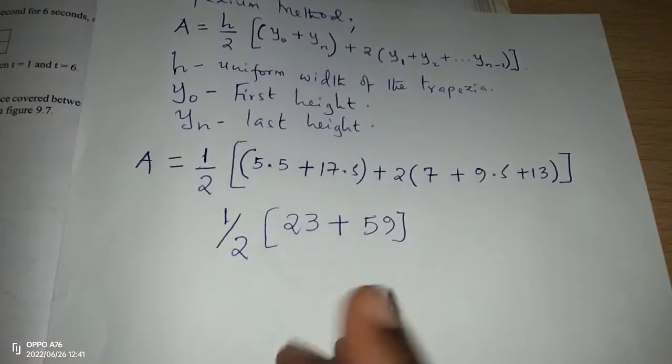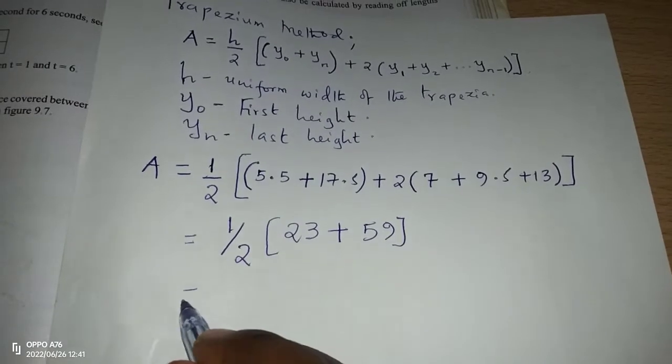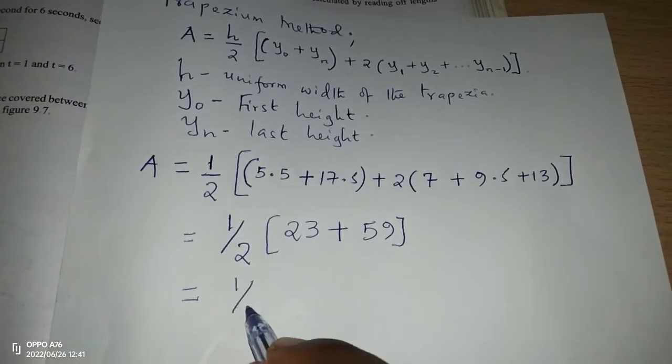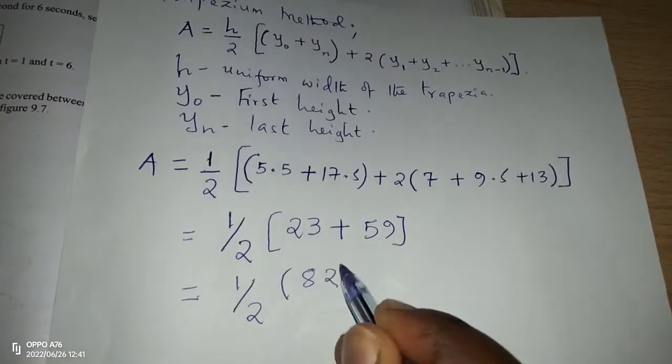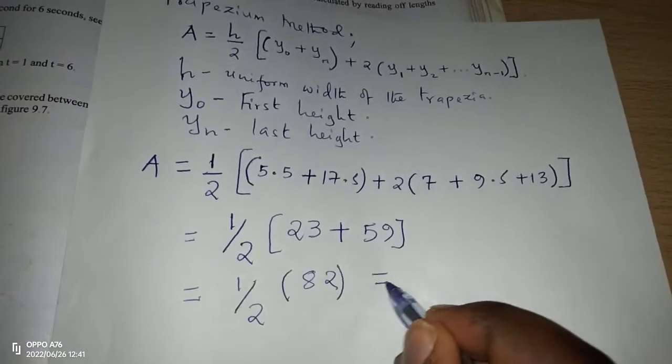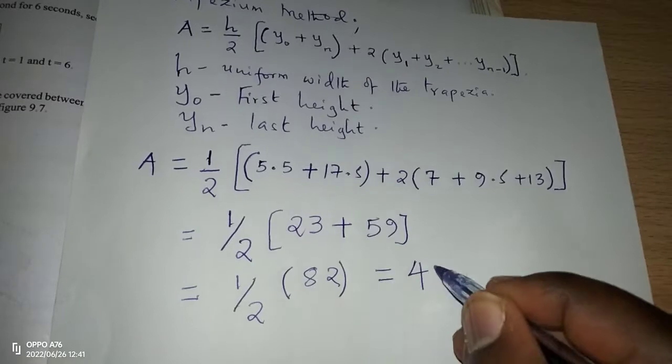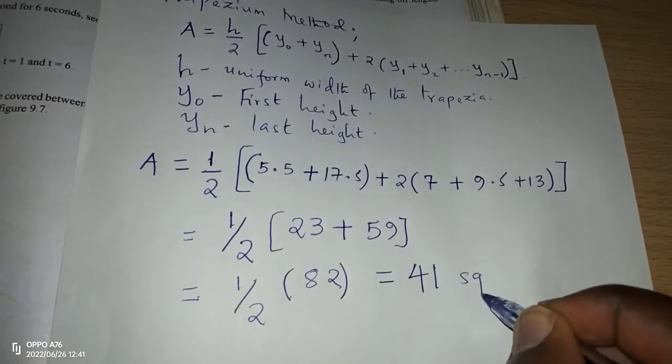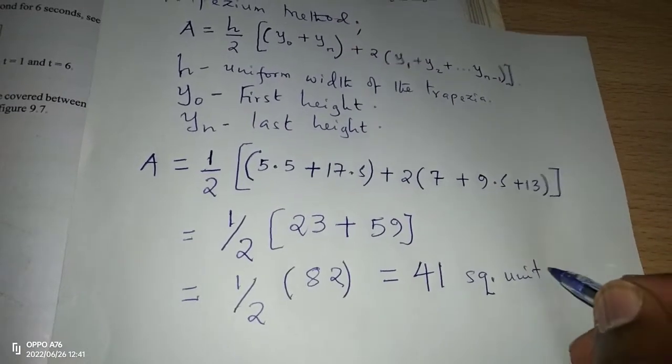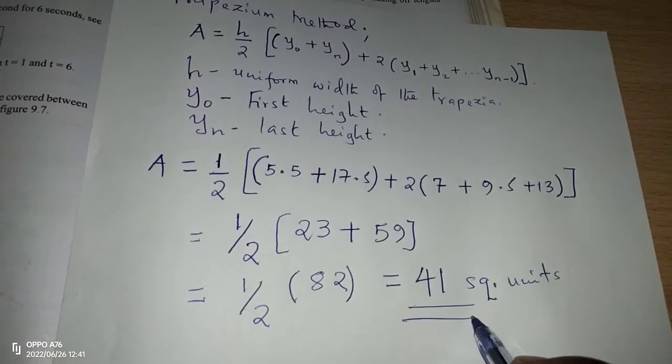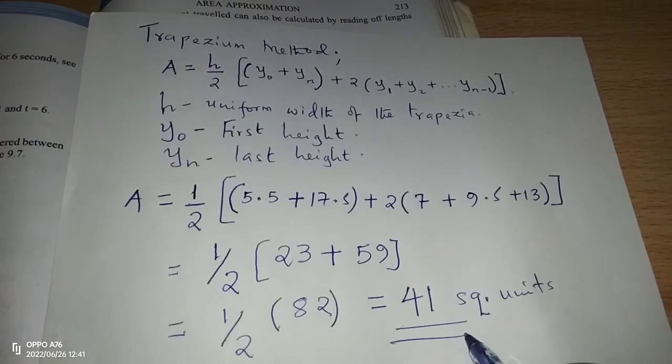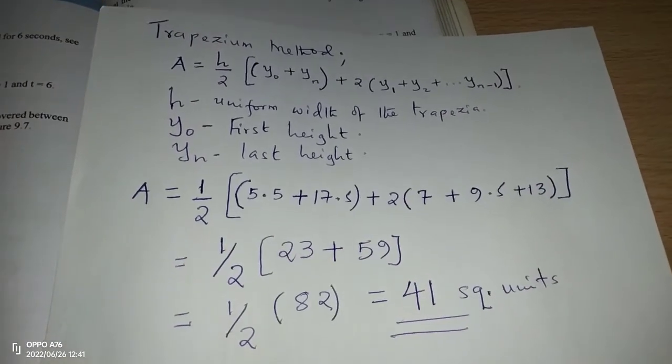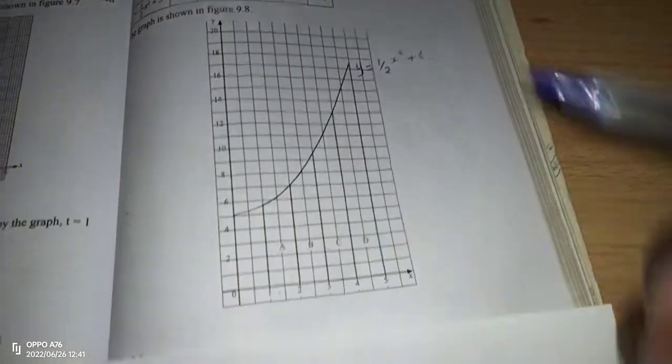So when we compute these, we're going to get ½ multiplied by 82. And this will give us exactly 41 square units.